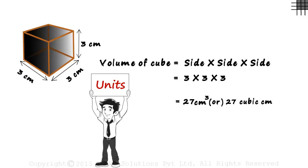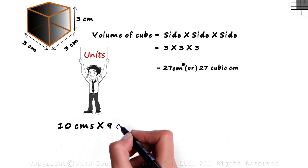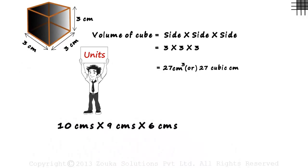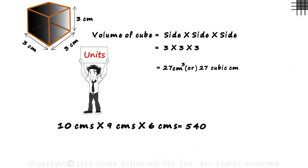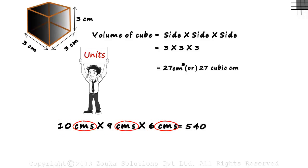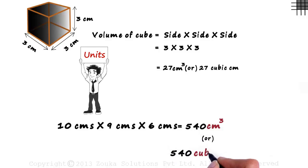We can see that when 3 lengths are multiplied, we utilize the concept of cubes. Let's understand another straightforward example: solve 10 centimeters multiplied by 9 centimeters multiplied by 6 centimeters. Multiplying the lengths gives us 540. We did not use the concept of cubes here as we have 3 different numbers, but multiplying the units gives us centimeters cubed, so the answer can also be written as 540 cubic centimeters.